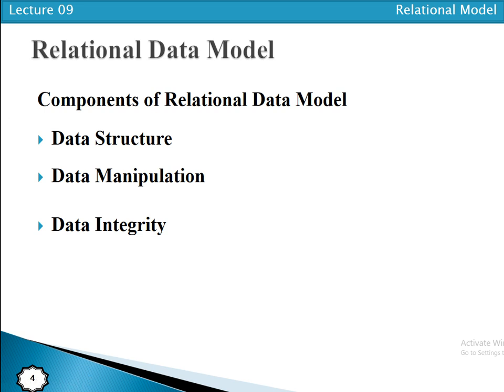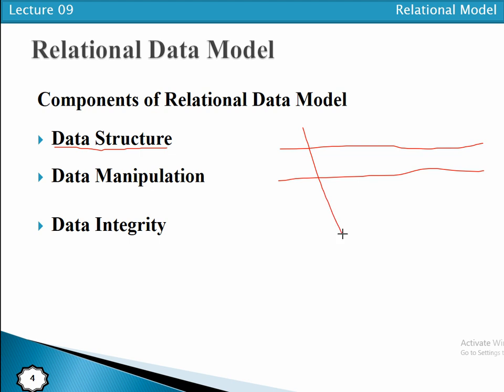The first component is data structures. In the relational data model, data is organized in the form of tables with rows and columns — different tables containing different columns and rows. The second component is data manipulation, which involves powerful operations like insertion, update, and deletion of data.